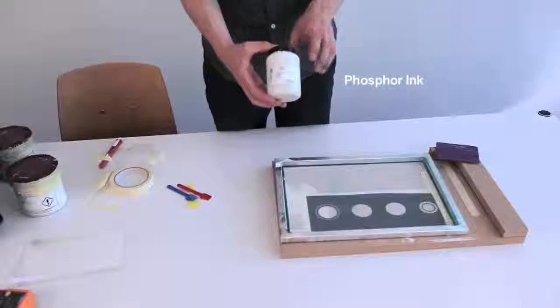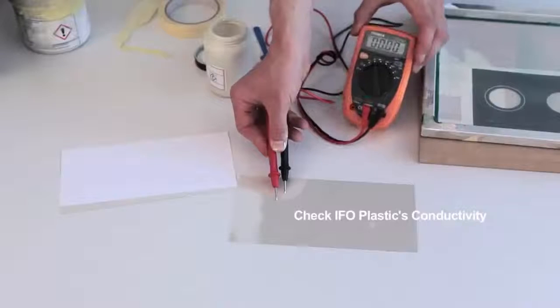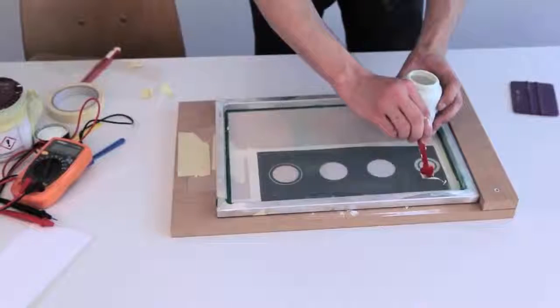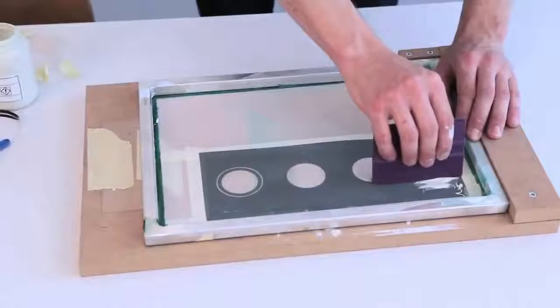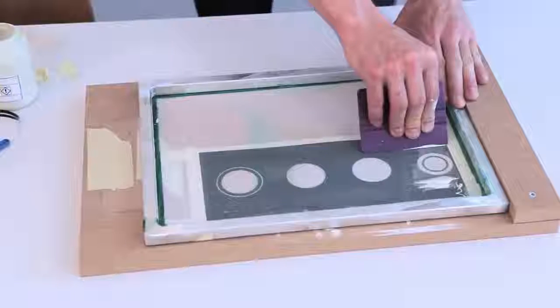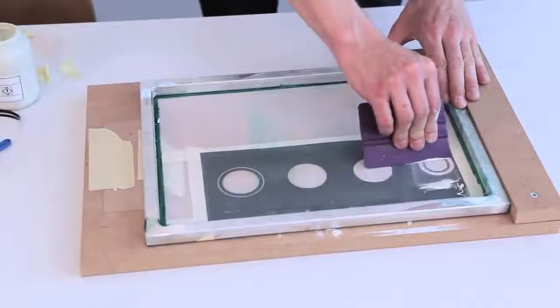We begin with the phosphor ink. Ensure that all the inks are mixed thoroughly before printing. We'll need to check the ITO to make sure that we're printing on the right side. Apply a small amount of the phosphor to the screen and use a squeegee to gently pull across the screen. If you miss any areas, go over again, but aim for a nice, even stroke across.